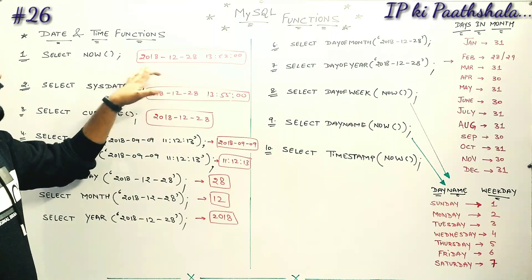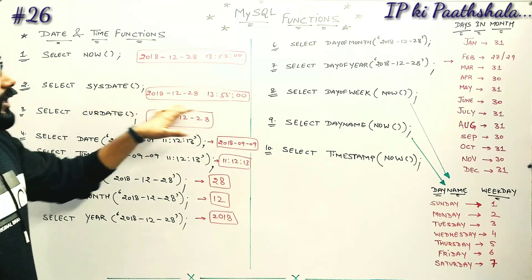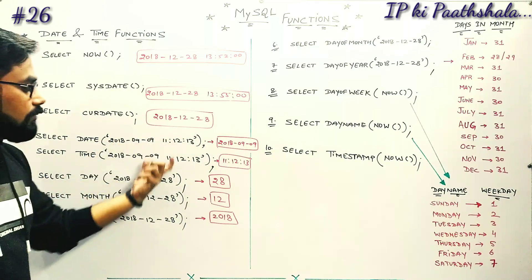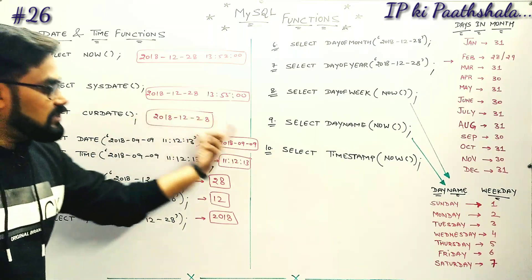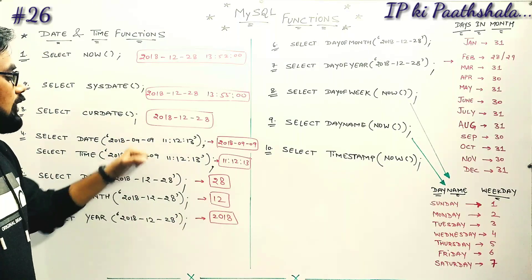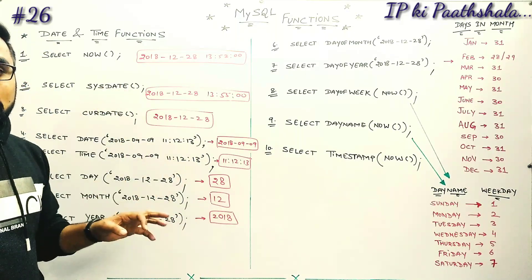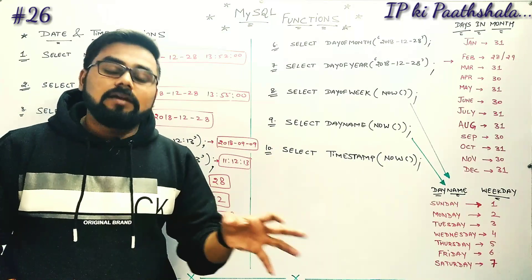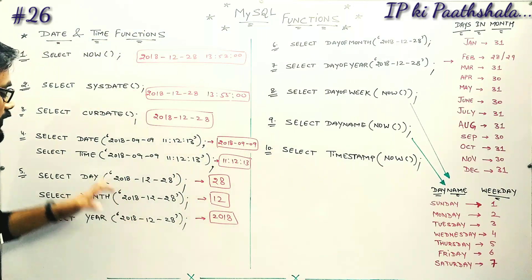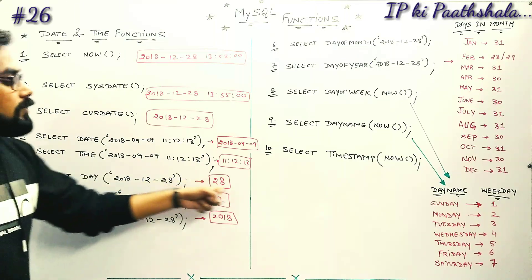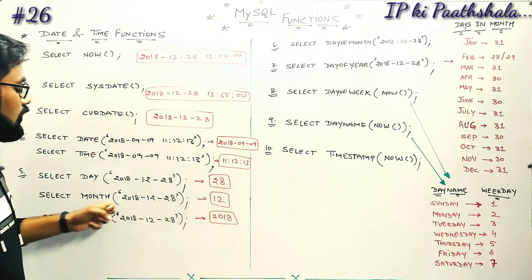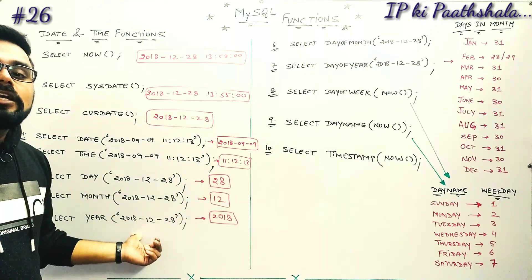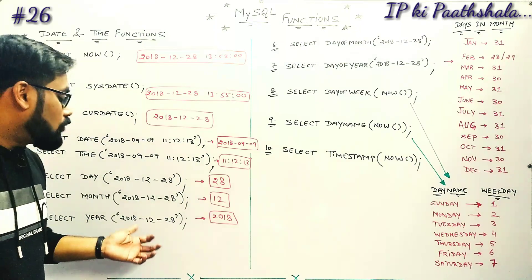Starting with NOW() — today's date and time. Then SYSDATE() — again date and time. Then CURRENT_DATE() — date only. Then DATE() with a random input value, from which we can select date and time. If you use NOW() function, it also gives you date and time from the current date.